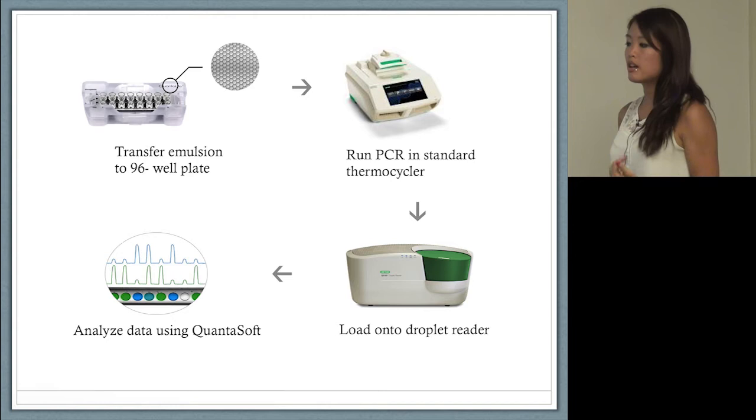The droplet reader can read the fluorescence amplitudes and analyze the droplets via a binary system of yes, the droplet contains templates so it's considered positive, or no, the droplet doesn't contain templates so it's considered negative.